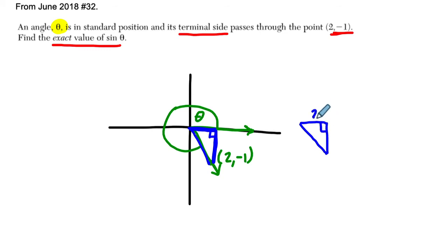It goes over 2 and down 1, and the hypotenuse, let's call it r, is the square root of 2 squared plus negative 1 squared, which is the square root of... Well, 2 squared is 4 plus negative 1 squared is 1, and that means it's the square root of 5.